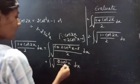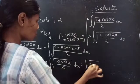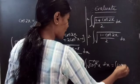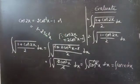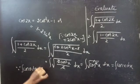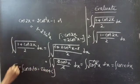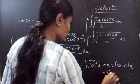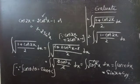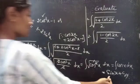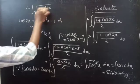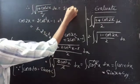The 2s cancel, so this equals the integral of square root of cos²x, dx. The square and square root cancel, giving us the integral of cos x dx. We know that the integral of cos θ dθ equals sin θ plus c, so applying the formula this equals sin x plus c. Therefore, the integral of square root of (1 plus cos 2x) divided by 2, dx equals sin x plus c.